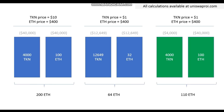Now let's picture the last scenario to understand impermanent loss: what if I kept these same assets but outside of Uniswap? The token price still goes from $10 to $1, but the mix doesn't change — I still have 4,000 tokens and 100 Ethereum. In value terms, 4,000 times $1 is $4,000, and Ethereum stays at $400. I end up with 110 Ethereum equivalent instead of 64. The difference between these two values is the impermanent loss. It's called impermanent because if the token price goes back to $10, the impermanent loss goes back to zero.